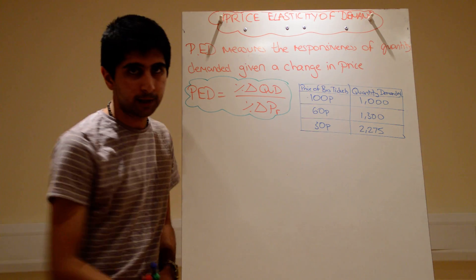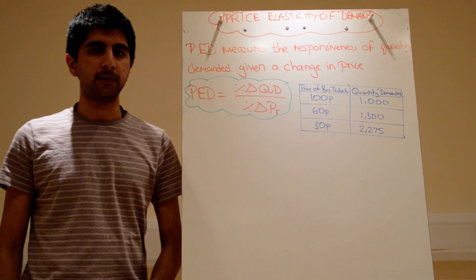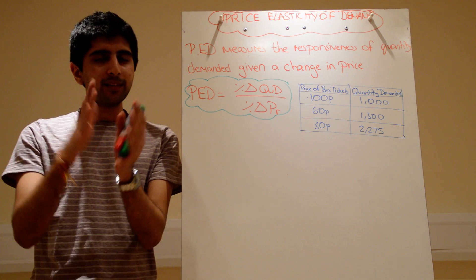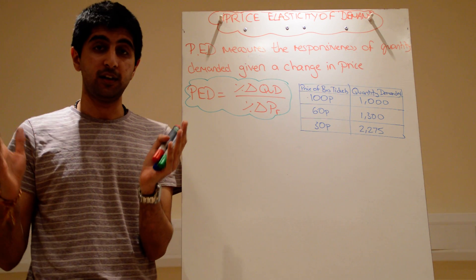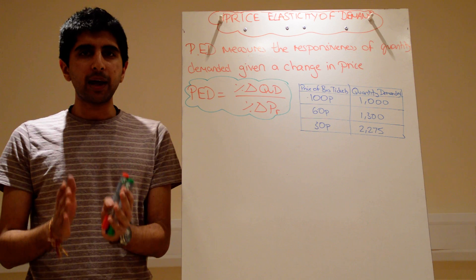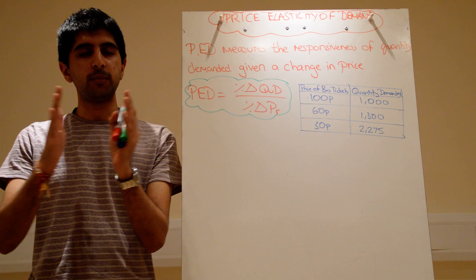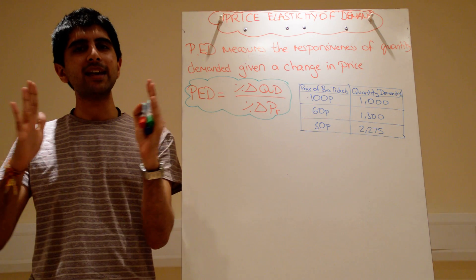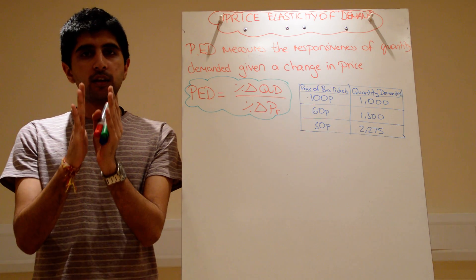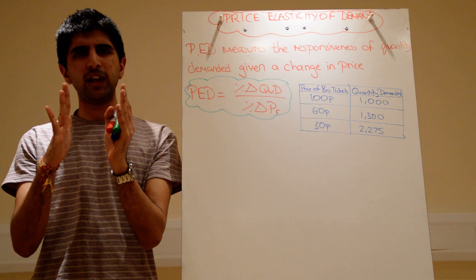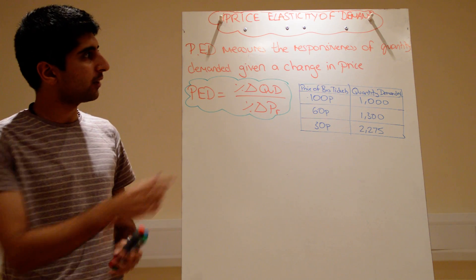Why do we use the word elasticity? Think of a girl's hairband, or an elastic band. Wrap it around your hands and stretch it out. You're putting force on it and you're trying to work out the responsiveness of the band. A hairband that you can stretch a long way is very responsive — very elastic, very stretchy. Whereas a hairband that's quite rigid is very inelastic; regardless of the force you put on it, it's not responding very much.